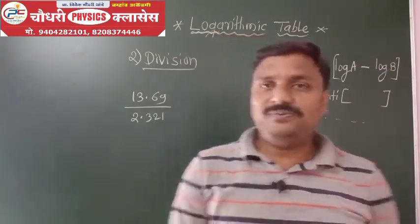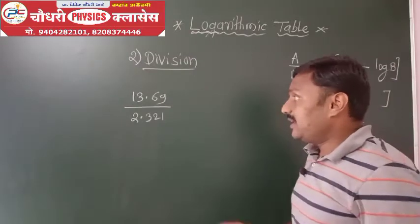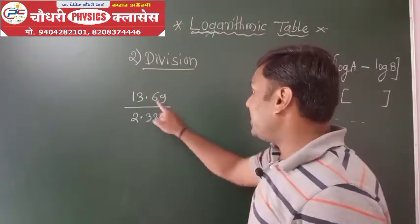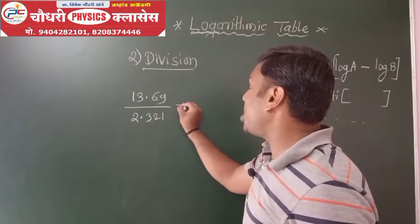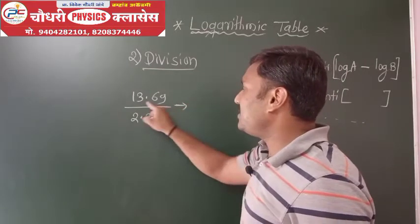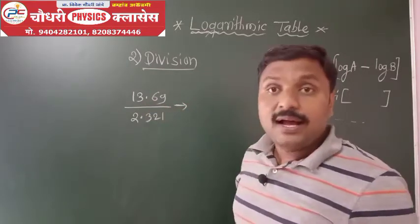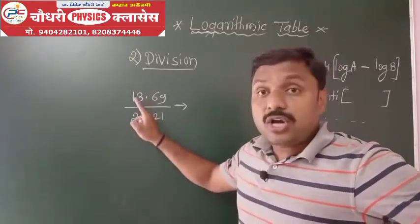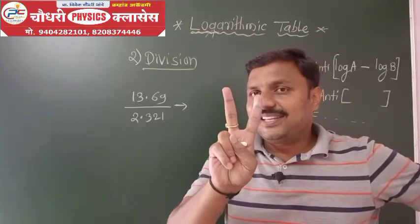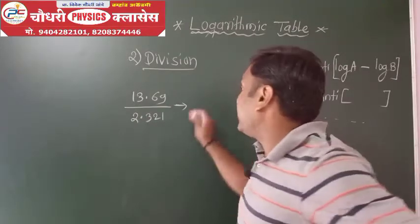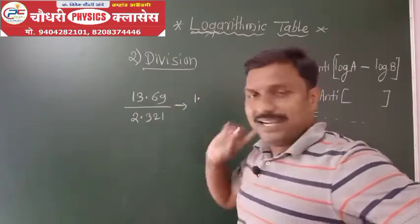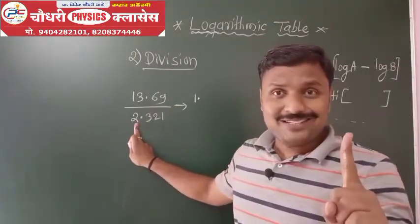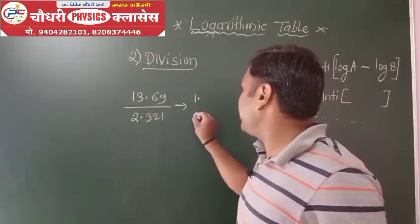Let's work through the example. We find the log of the first term. Looking at the characteristics: the number has a decimal and two digits before it, so we do one minus — the characteristic is one. For the second term, the characteristic is zero.